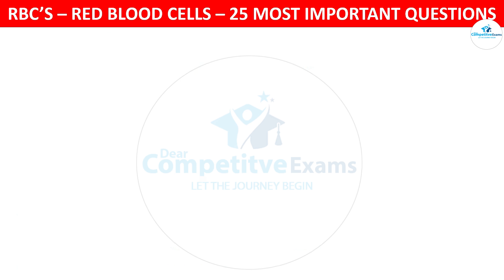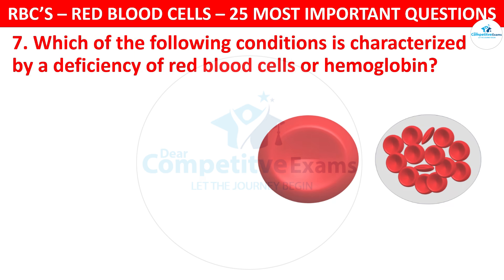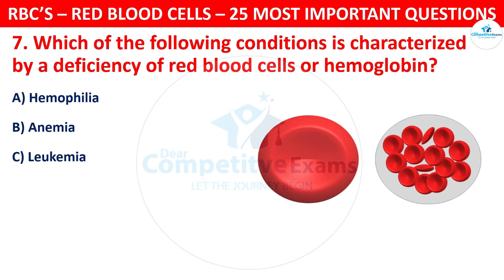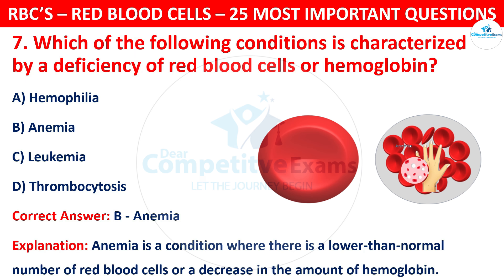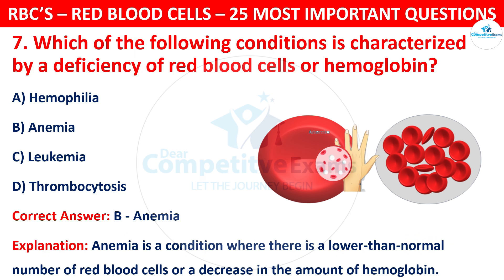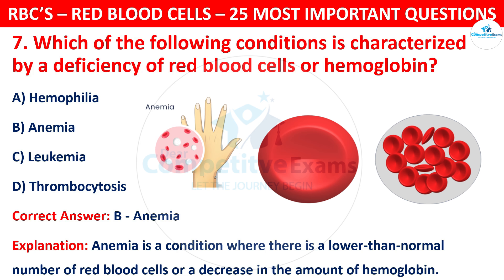Question 7. Which of the following conditions is characterized by a deficiency of red blood cells or hemoglobin? Your options are: Hemophilia, Anemia, Leukemia, or Thrombocytosis. The correct answer is B, that is Anemia. Anemia is a condition where there is a lower than normal number of red blood cells or a decrease in the amount of hemoglobin.